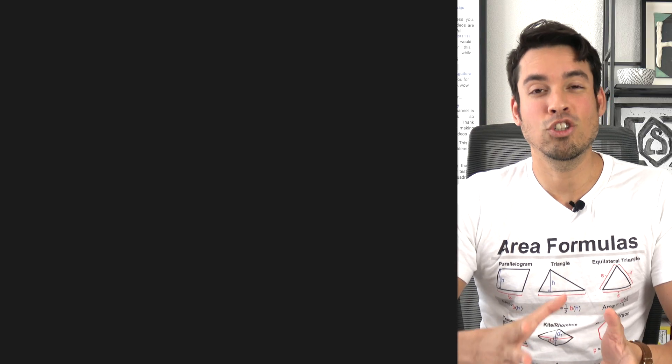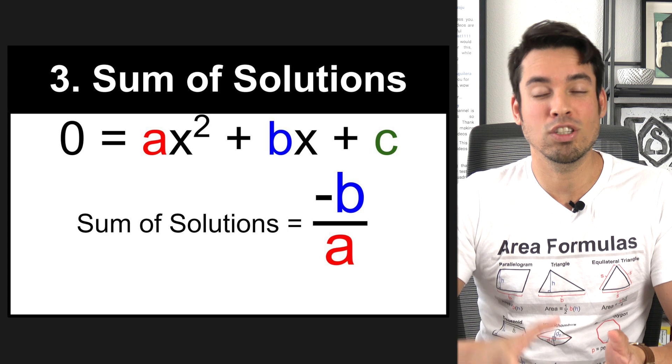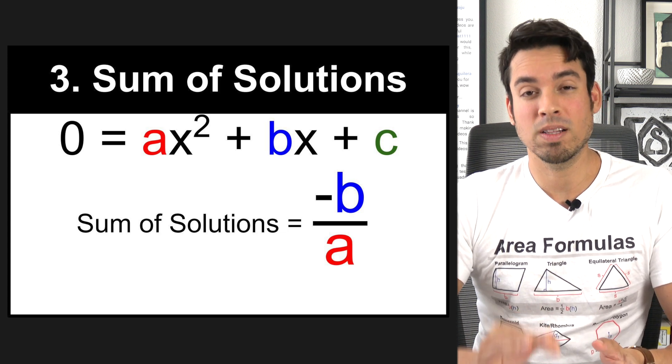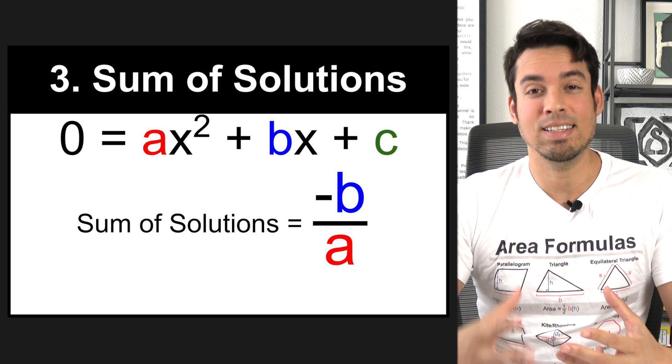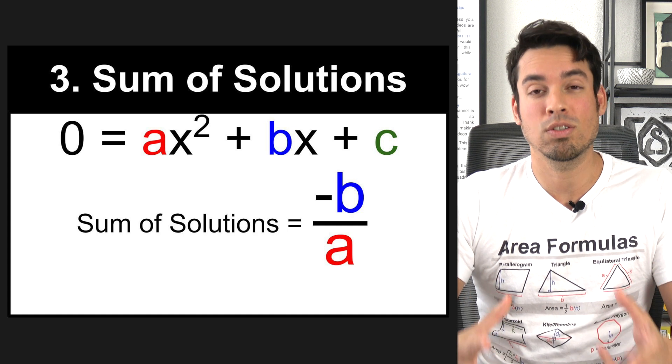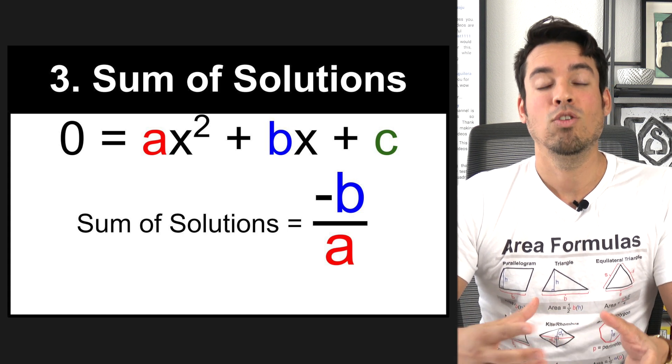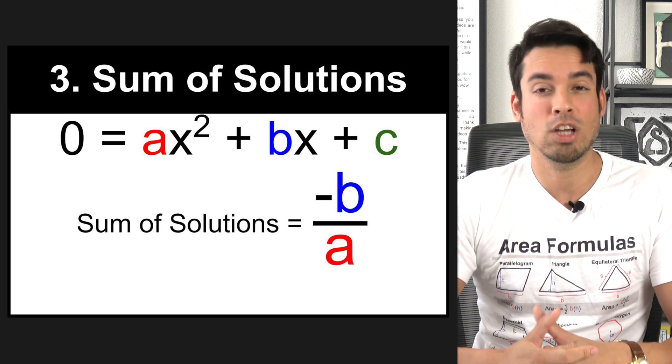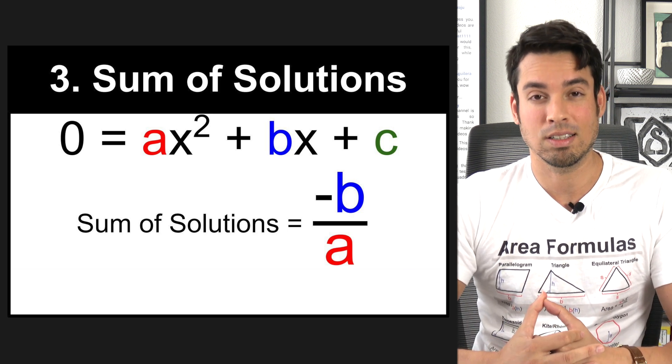Next, we have the precision formula for the sum of solutions of a quadratic equation. Once again, this is a very slick formula to have in your back pocket because the SAT definitely asks about the sum of quadratic solutions. Now, if you don't know this formula, negative B over A, you can always find the solutions and add them together. But this can shave off a nice 20, 30 seconds.